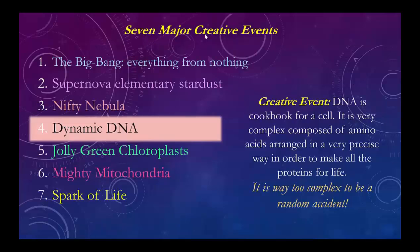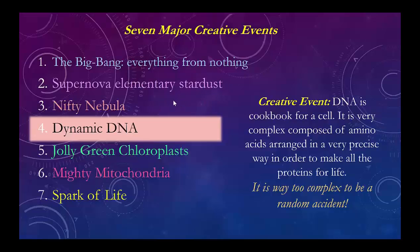This is our list of the seven major creative events. The first three were in part one: the Big Bang — everything from nothing; the supernova, when the big first generation stars implode and explode, blasting out all 94 essential elements from stardust; and the Nifty Nebula, which collected the star dust and made second-generation stars like the Sun and planets like ours that got all 94 essential elements. Now we're in part two, beginning with the dynamic DNA, then chloroplasts, mitochondria, and the spark of life.